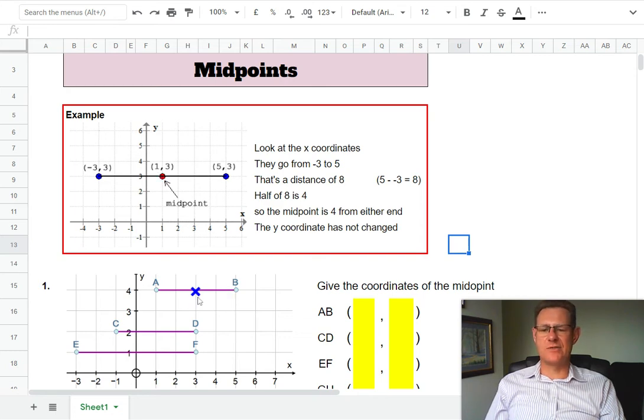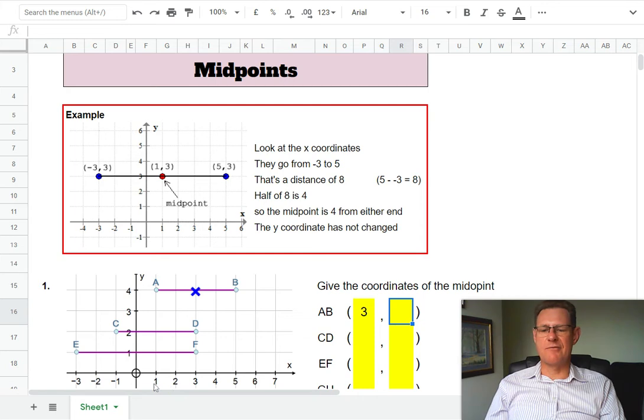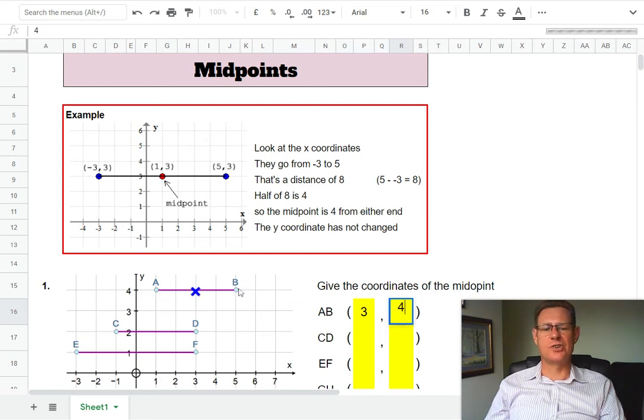Let's have a look at this first point. You can see the blue cross representing the midpoint, so it's obviously three across and four up. So that's the value we're going to put in here: three and four. But you can also see that from one to five is a length of four. Half of that length gives you two, and so this blue cross is two from the left or two from the right.